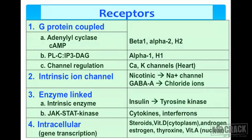Now the last part of target molecules: receptors. There are four important types — G-protein coupled receptors, intrinsic ion channel receptors, enzyme-linked receptors, and intracellular receptors. G-protein coupled receptors are the most important, working by the adenylyl cyclase/cAMP system — examples include beta-1, alpha-2, and H2 receptors.